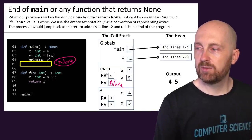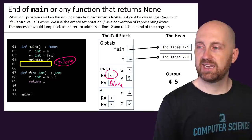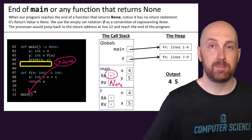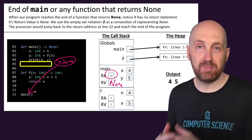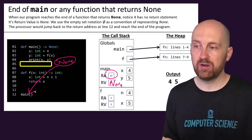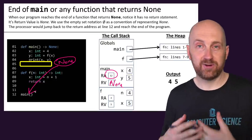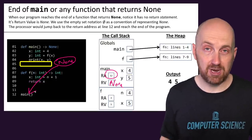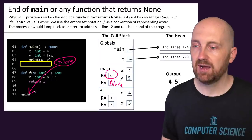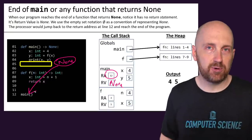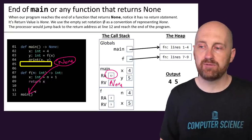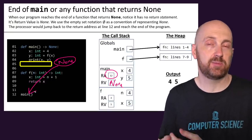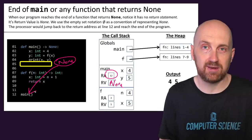Line 12 is where the function call to main occurred, so this function call would evaluate to the value none, which is useless. Then our program would continue on from here, but we've actually reached the end of it, so our program would complete and it's done.